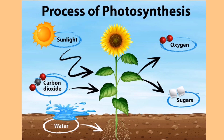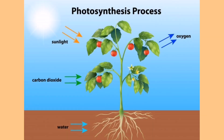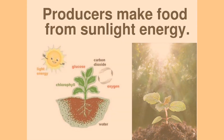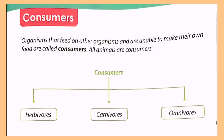Plants use sunlight to produce glucose and oxygen. Since plants can make their own food, they are considered producers. Plants take in carbon dioxide along with water and nutrients, then use energy from the sun to convert them into glucose, which is sugar, and oxygen. Glucose is the essential source of energy for plants and other organisms.